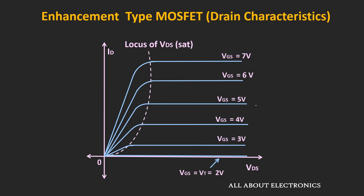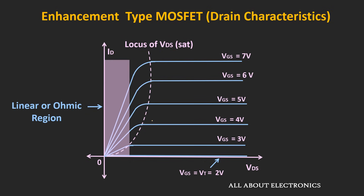If we look at the drain curves — the Id versus Vds curves for different values of Vgs — as the value of Vgs increases, the current Id also increases. The parabolic curve shows the locus of Vds where the drain current Id gets saturated. The region to the left of this locus is known as the linear or ohmic region, where the MOSFET can be operated as a voltage-controlled resistor. This occurs when Vds is less than Vgs minus Vt, and Vgs is greater than Vt.